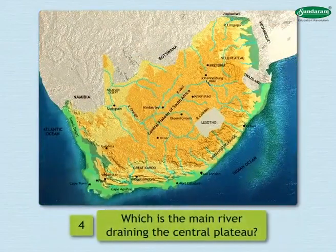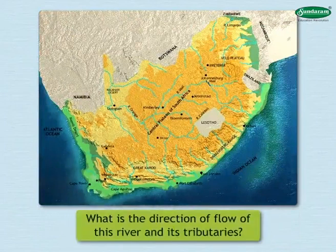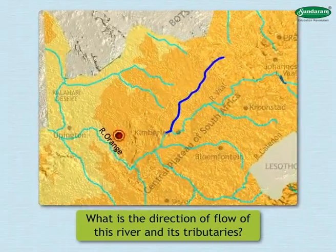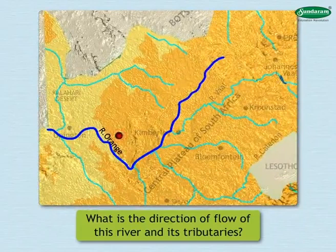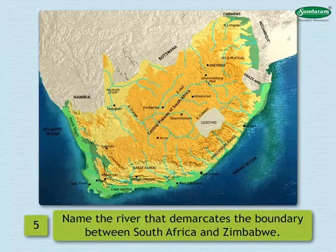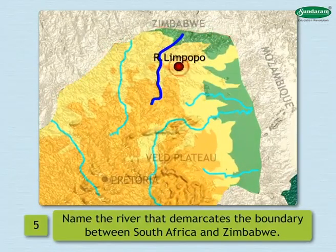4. Which is the main river draining the central plateau, and what is the direction of its flow and tributaries? The main river is the Orange River, and it flows westward; the Vaal River is its tributary. 5. Name the river that demarcates the boundary between South Africa and Zimbabwe. The Limpopo River flows on the borderline of Zimbabwe and the Republic of South Africa.